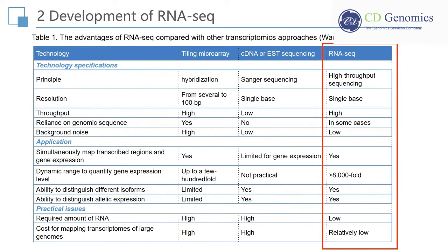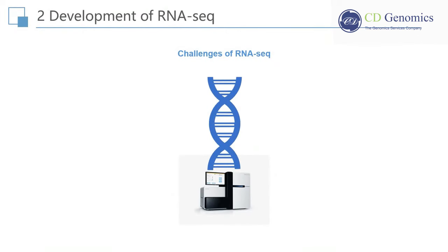RNA-Seq is often referred to as RNA profiling using next- or third-generation sequencing technologies. Compared to traditional microarray and Sanger sequencing, it has multiple advantages in technology specifications, applications, and practical issues. RNA-Seq is a high-throughput RNA profiling technology at single-base resolution with low background noise. It can be used to simultaneously map transcribed regions and gene expression, as well as distinguish different isoforms and allelic expression. Compared to microarray and Sanger sequencing, it requires a lower amount of RNA and costs less. However, RNA-Seq is faced with several challenges, such as short-read and PCR biases.